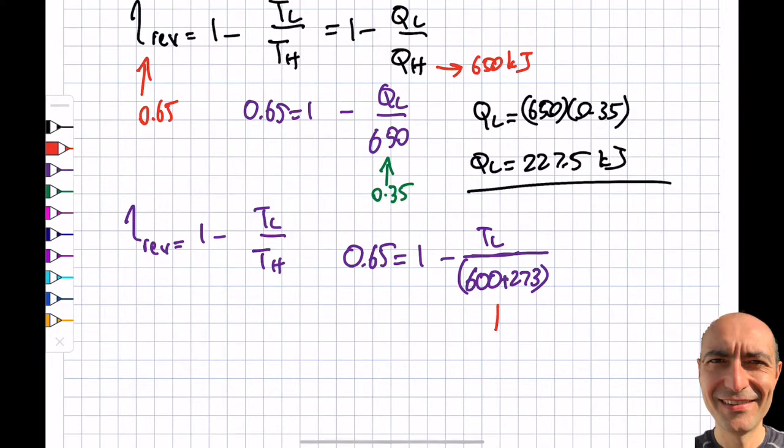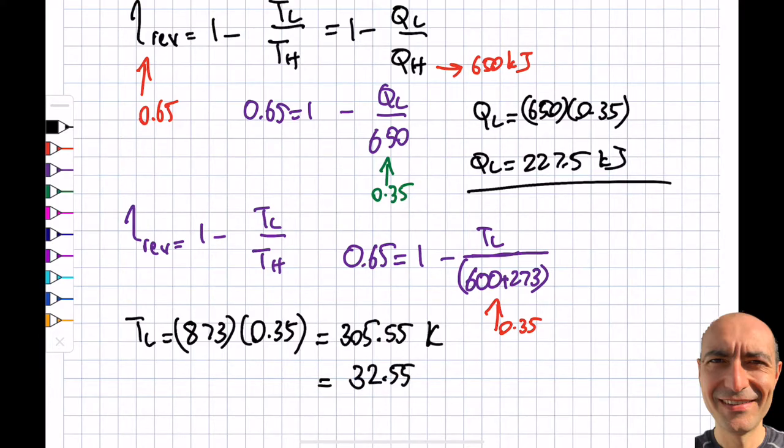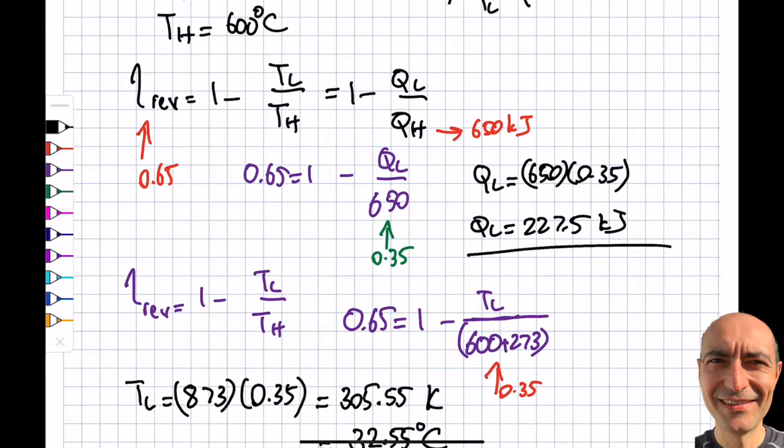Now it's going to be different. η_rev = 0.65 = 1 - TL/TH, so TL/TH = 0.35. My TL = (600 + 273) × 0.35 = 873 × 0.35 = 305.55 Kelvin. Converting to Celsius by subtracting 273 gives 32.55 Celsius. That is the answer for part B.